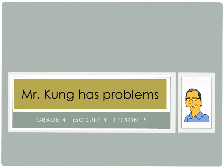Hello and welcome to another episode of Mr. Kung Has Problems. Today we're working on Module 4, Lesson 15, which means we're working with quadrilaterals. We're going to look at quadrilaterals that have parallel sides, perpendicular lines, and angles that are or aren't specified. Let's take a look at a few of the problems in your homework tonight.